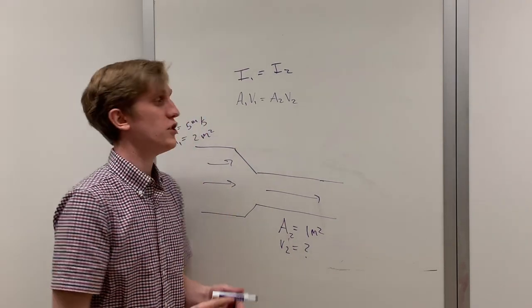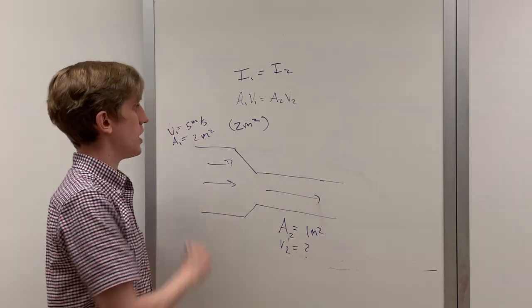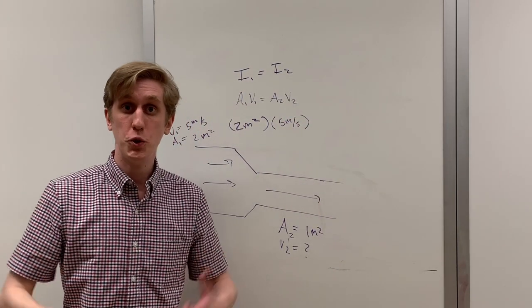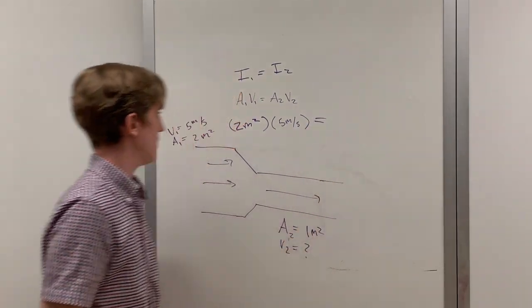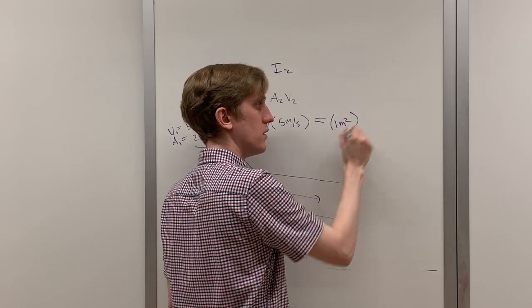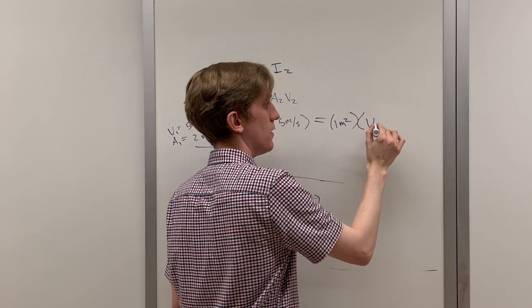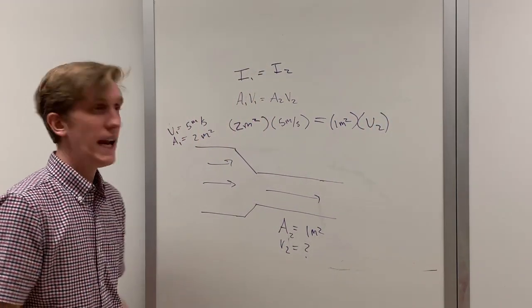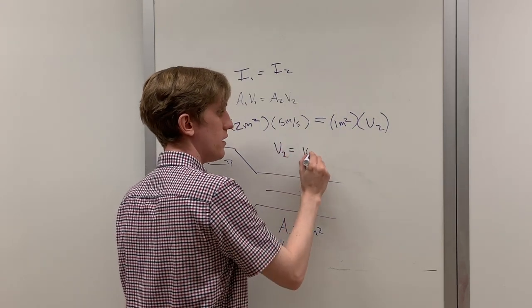The area on the left is just two meters squared, while the velocity on the left is just five meters per second. This has to be equal to the area times the velocity on the right-hand side. The area is just one meter squared, and the speed of the fluid is what we're trying to determine. If you solve this equation, you will find that V2 is equal to 10 meters per second.